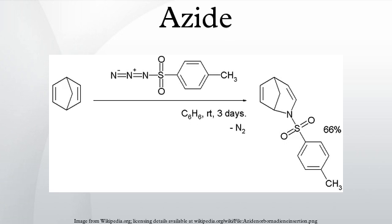Azide is the anion with the formula N3−. It is the conjugate base of hydrazoic acid. N3− is a linear anion that is isoelectronic with CO2 and N2O. Per valence bond theory, azide can be described by several resonance structures, an important one being N−=N+=N−. Azide is also a functional group in organic chemistry, RN3. The dominant application of azides is as a propellant in airbags.